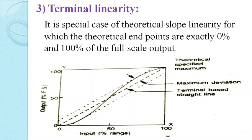The third type of linearity is terminal linearity. This is a special case of theoretical slope linearity for which the theoretical endpoints are exactly 0% and 100% of the full scale output. Here we draw the straight line such that the deviation on both sides of the calibration cycle is identical, which is known as the terminal placed straight line. The following figure shows the terminal linearity relation.